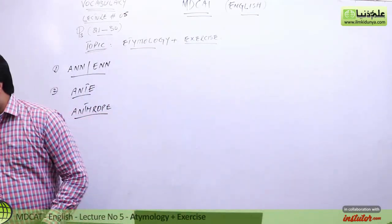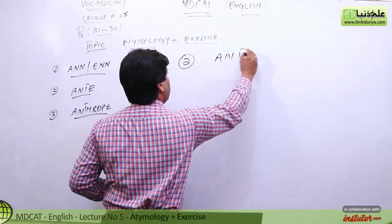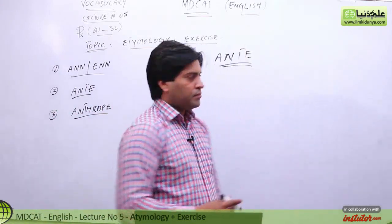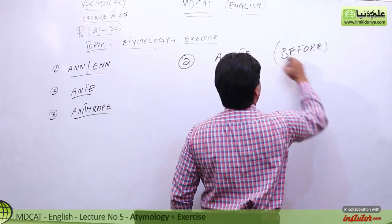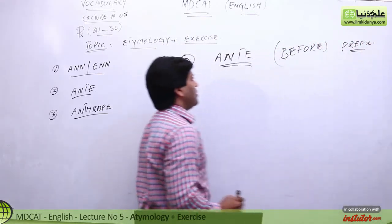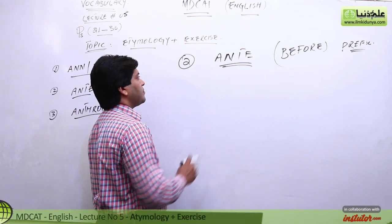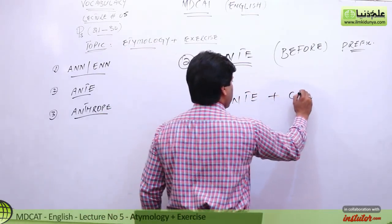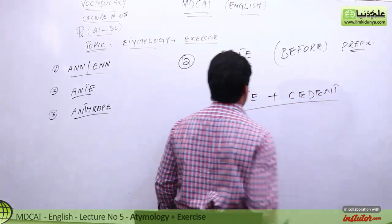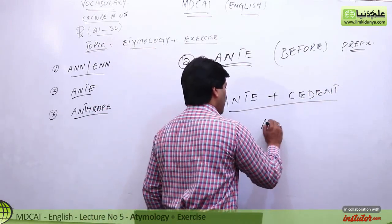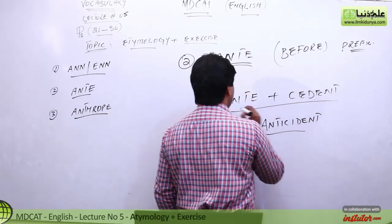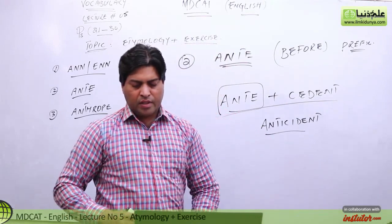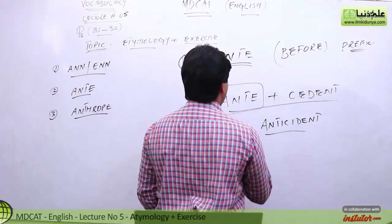The next unit of letters is ANTE — A-N-T-E. ANTE is used in the sense of 'before', and it is used as a prefix. Ab main word likhta hoon: antecedent — ANTE + CEDENT. Antecedent means preceding word or preceding event. For example, if there is event number one and event number two, the antecedent is the one that came before — yaani jis baqiye ka main pehle zikr kar chuka hoon, that is the antecedent.